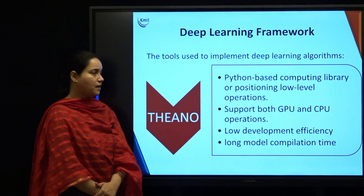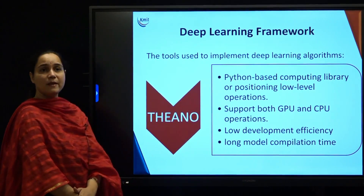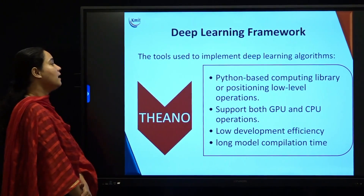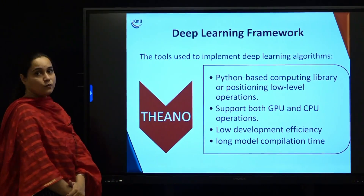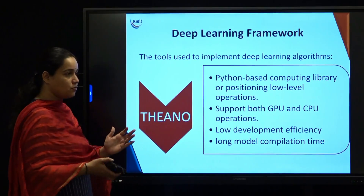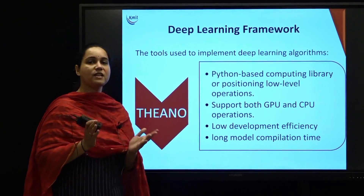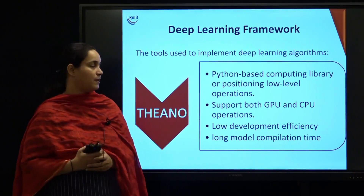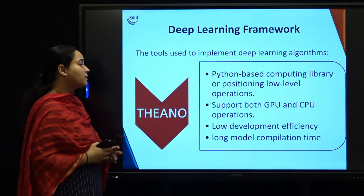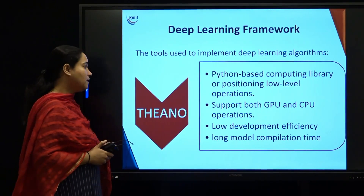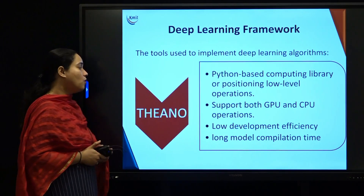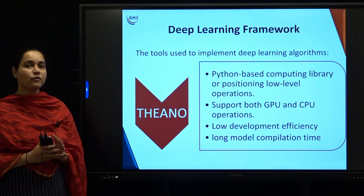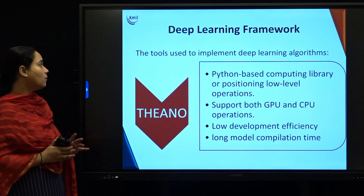Theano is basically a library based on Python and is used for low-level operations. It supports both CPU as well as GPU. However, smaller scale applications, low development efficiency, and long model compilation time are some of the drawbacks of Theano.